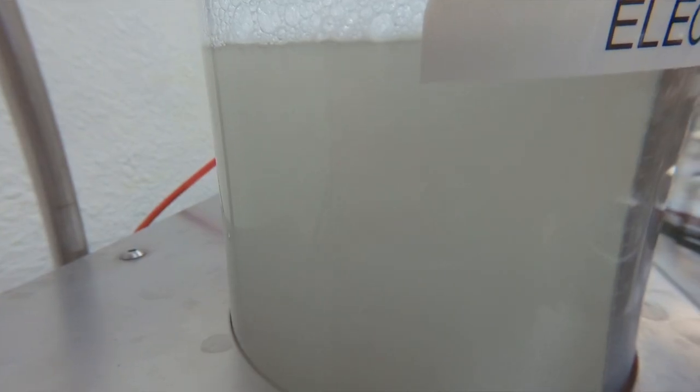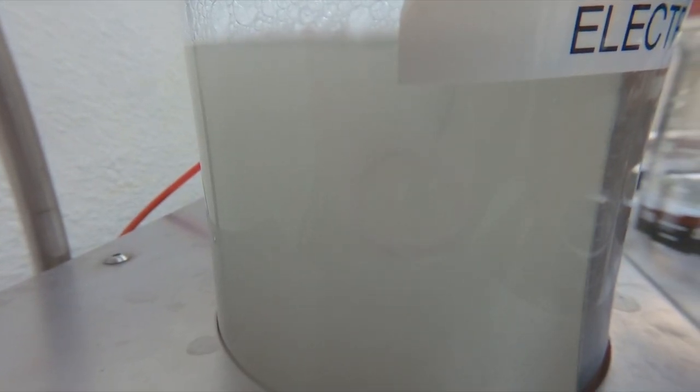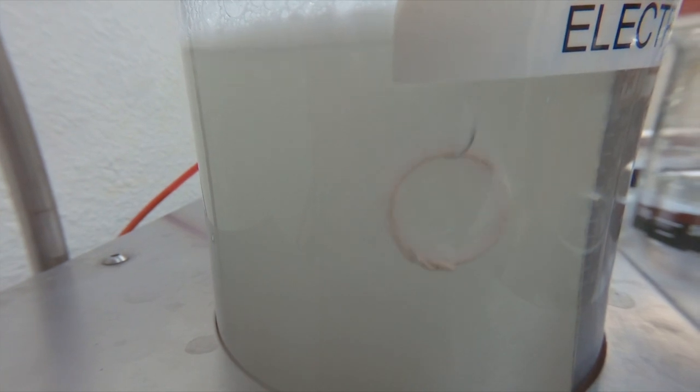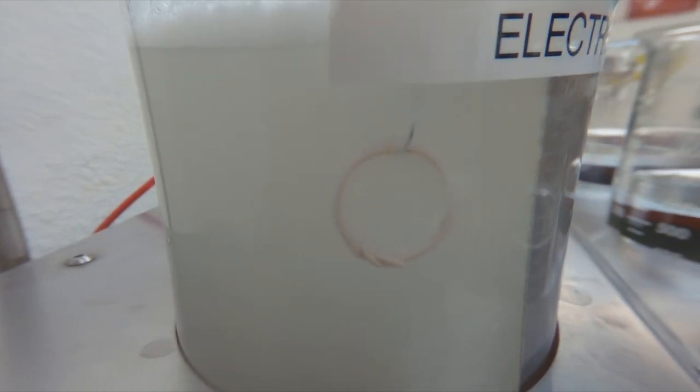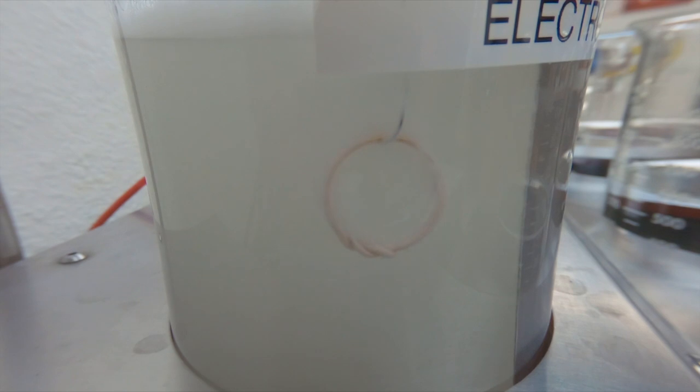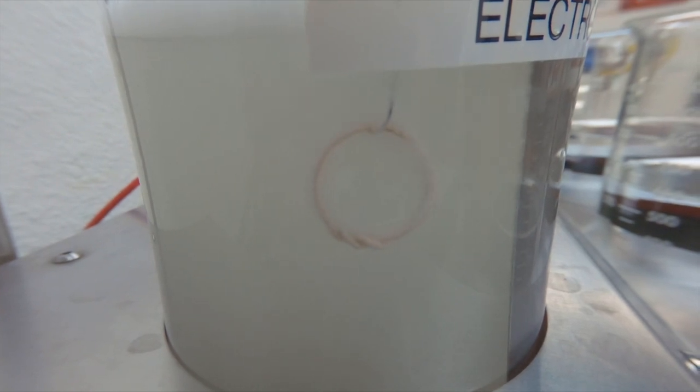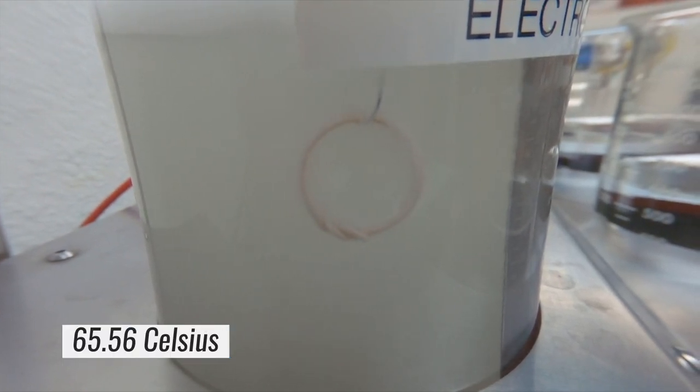We're going to electro clean for 30 seconds to one minute. You can see the hydrogen bubbles. The hydrogen bubbles are knocking off any dirt and oil that are on the piece. The electro cleaner is stirred and heated. It's heated to 150 Fahrenheit.